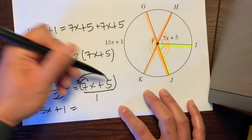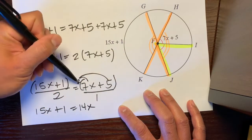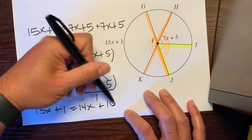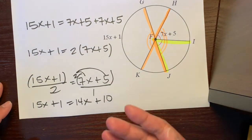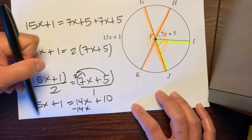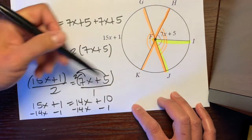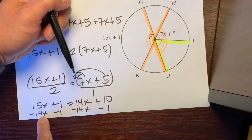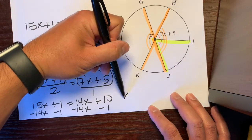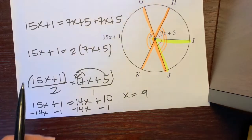Let's distribute that. 2 times 7x is 14x. 2 times 5 is 10. Then, let's solve it. Let's subtract 14x from both sides. And let's subtract this 1 from both sides. It looks like 15x minus 14x is just 1x or x. 10 minus 1 is 9.